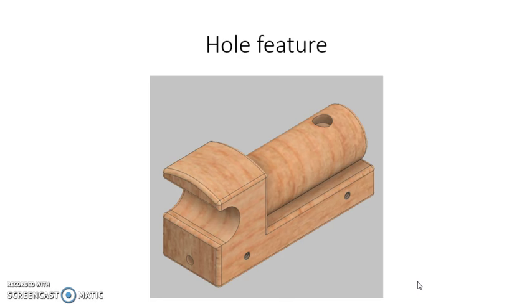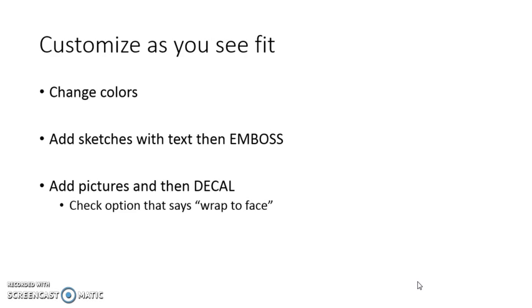Now, one last thing. As part of this project, you're supposed to customize it. So don't forget, after all is said and done, go ahead and change the colors. Add sketches with text, and then after you use the text tool and you finish sketch, then you can choose Emboss and raise that text. Feel free to add pictures. If you go into a sketch mode, you can add an image. And after you add the image and you finish the sketch, then you can use what's called the decal tool. So you can choose an option that says wrap to face, and you can do things like put Thomas the train's face on the front of your engine. Things like that. We want you to get personal with this. We want you to make it creative. We want you to have a little bit of fun with it. So customize the train body as you see fit, as well as the rest of the train parts as you go through this project.